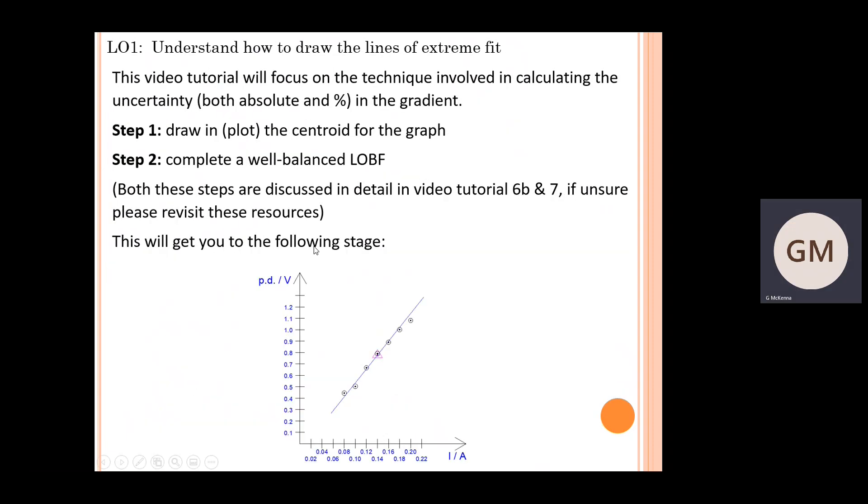This tutorial will focus on the technique involved in calculating the uncertainty, both absolute and percentage, in the gradient. We're sort of up to the stage where you can plot the graph, get the centroid for the graph, and do a well-balanced line of best fit. If these terms don't make sense to you, make sure you go back and look in detail at tutorial 6b and 7, otherwise this will not make sense.